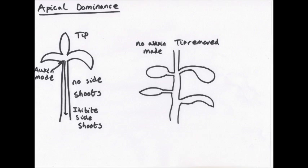Apical dominance means that leaves and growth occur at the tip — the apex — rather than side shoots, so the tip is dominant. If you remove the tip of the plant, no auxin is made because auxin is produced at the tip. Auxin moves down the plant and stops side shoots growing, so if you remove the tip and therefore the auxin, side shoots will grow.